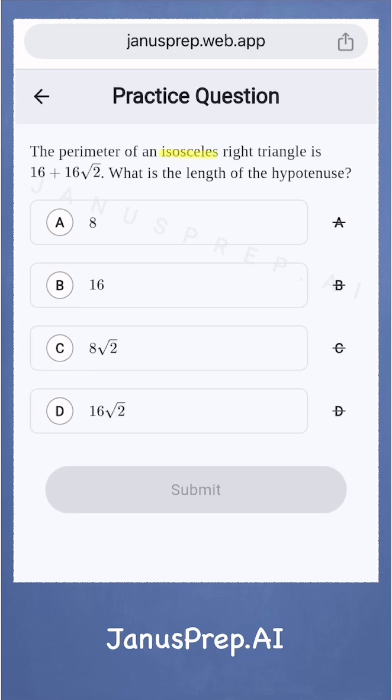We know this is an isosceles right triangle, which means it has two equal legs and one hypotenuse that follows the 45-45-90 triangle ratio.